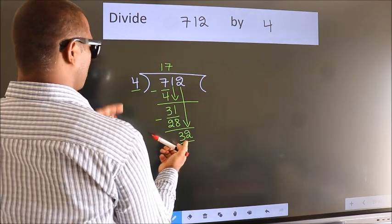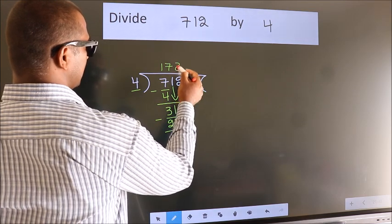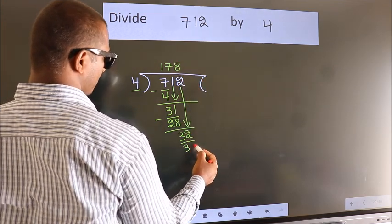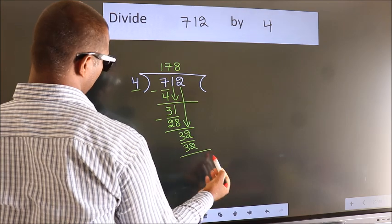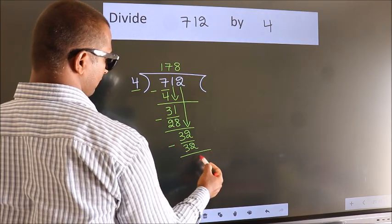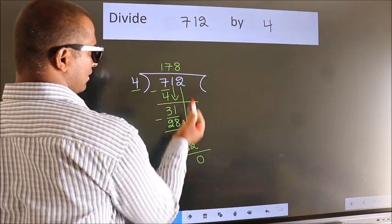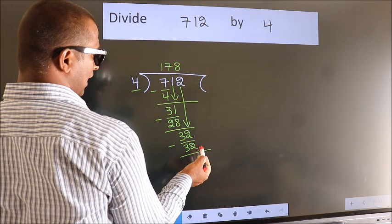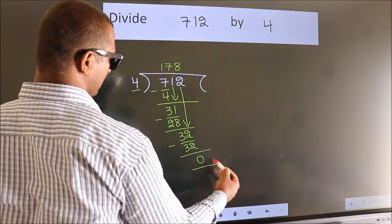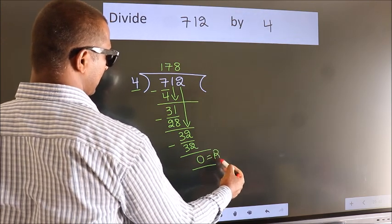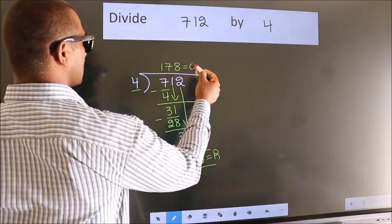When do we get 32 in the 4 table? 4 eights, 32. Now we subtract. We get 0. No more numbers to bring it down, so we stop here. This is our remainder. This is our quotient.